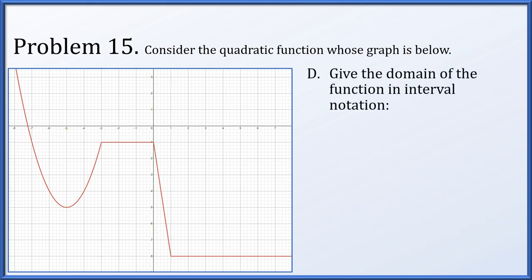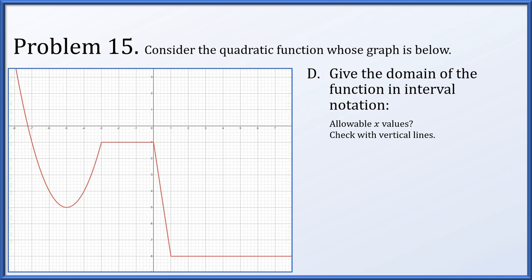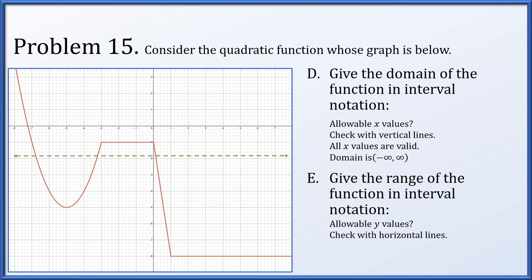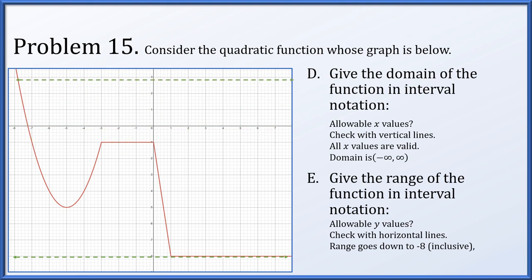Give the domain of the function in interval notation. All x values are valid — checking with vertical lines confirms the domain is all real numbers. Give the range: checking with horizontal lines, the lowest y value is negative 8 and the quadratic piece on the left grows without bound upward. So the range is the interval from negative 8 to infinity, including negative 8.